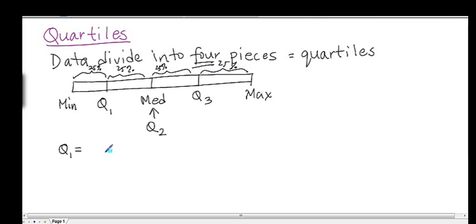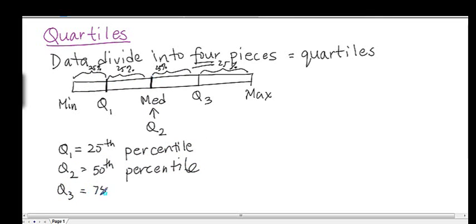And what percentile is it? Well, if you remember the definition of percentile, percentile means that percent of the data is below that point. So how much of the data is below Q1? 25%. So Q1 is the 25th percentile. What about Q2, the median? Well, what percent of the data is below this point? 25 and 25, 50. So Q2, which is the median, is also known as the 50th percentile, and Q3 is 75th percentile.